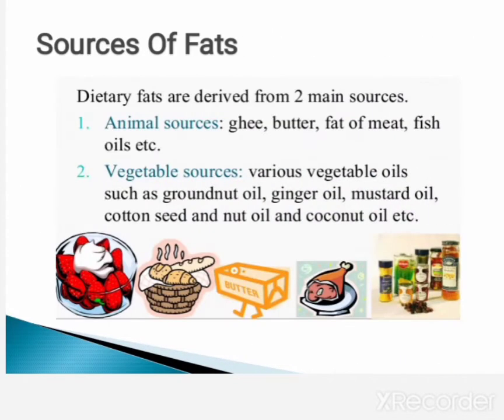Now let's see about sources of fats. Dietary fats are derived from two main sources. Animal sources: ghee, butter, fat of meat, fish, oils, etc. are the sources of animal products. Various vegetable oils such as groundnut oil, ginger oil, mustard oil, cottonseed and nut oil, and coconut oil, etc. are the plant sources of fats.